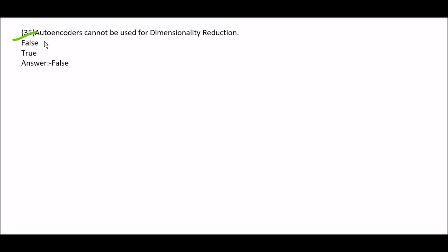Question 35: autoencoders cannot be used for dimensionality reduction — false or true? This is false. So autoencoders can be used for dimensionality reduction. Now see you in the next video. Make sure you subscribe to my channel for more videos. Wishing you all the very best for your examination. Keep learning.